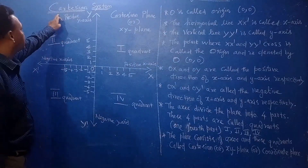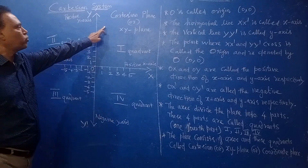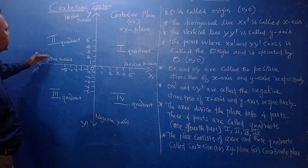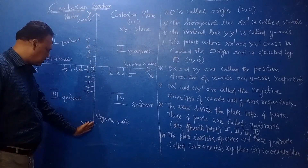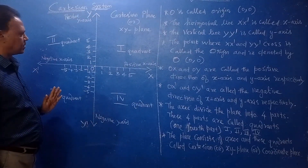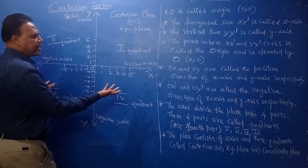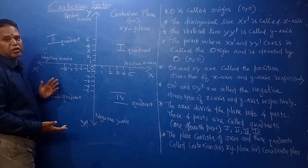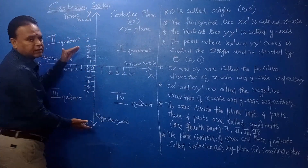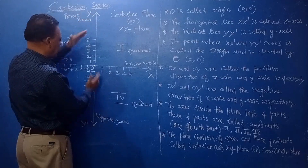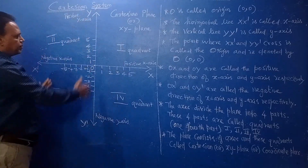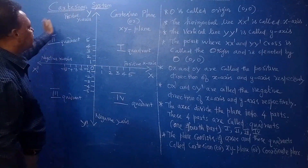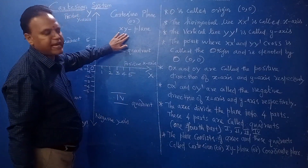Next we are going to see the Cartesian system. You take XX-dash as the X axis and YY-dash as the Y axis. One number line is taken horizontally and another vertically, and both are made perpendicular to each other. This gives you the Cartesian plane, also called the XY plane.